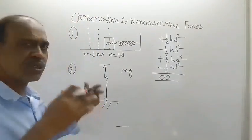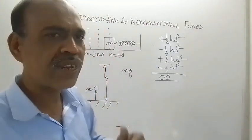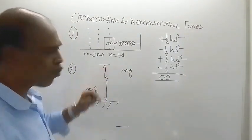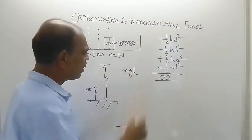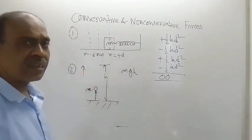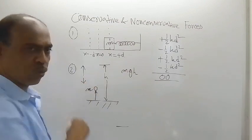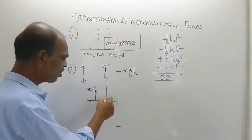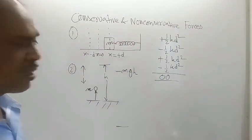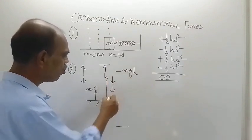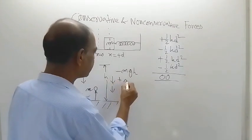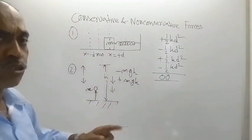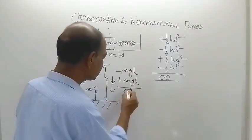The displacement going up is h upward, but weight mg acts downward, so work done by gravity going up is −mgh. When the object falls from height h to the ground, displacement is downward and weight is also downward, so work done is +mgh. This is a complete cycle — start and end points are the same — and total work done is again zero.